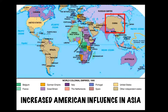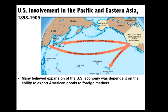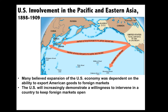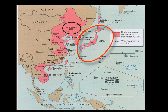With all of this foreign influence in China, keep in mind China was not consulted about any of these policies, creating a bunch of resentment amongst the Chinese population. What is important about the situation in China and the US declaration of the Open Door Policy is what it shows about US foreign policy, especially going into the 20th century. Many believed expansion of the US economy depended on the ability to export American goods to foreign markets, and the US would increasingly demonstrate a willingness to intervene in a country to keep foreign markets open. If access to a region was shut off from the United States, this was considered a threat to US interests. And while most foreign powers came to accept the idea of the Open Door Policy in China, the closing of this market would be exactly what happened as Japan began to emerge as the dominant power in Asia.